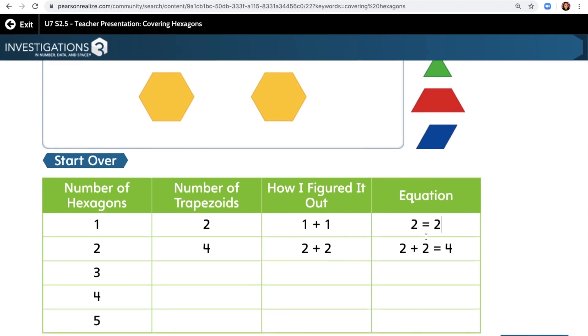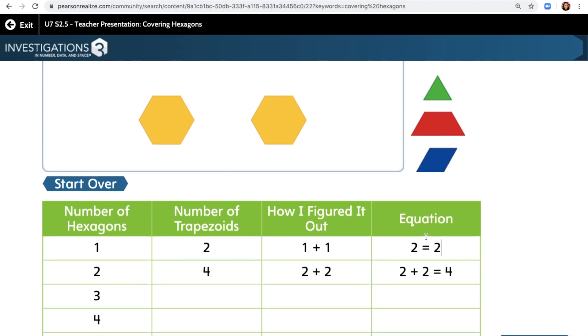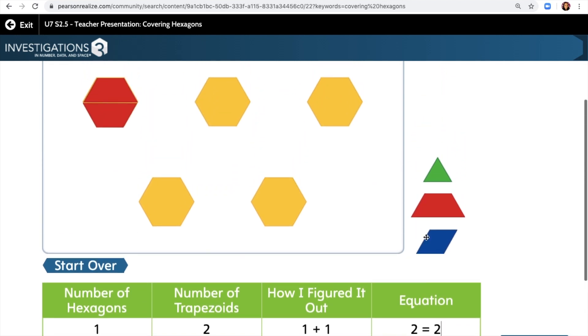All right, second grade friends, let's see if you can figure out on page 481 how many rhombuses you'll need to cover your hexagons and how many triangles you'll need to cover your hexagons. Good luck.